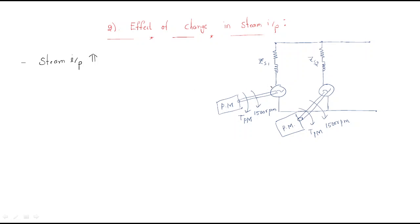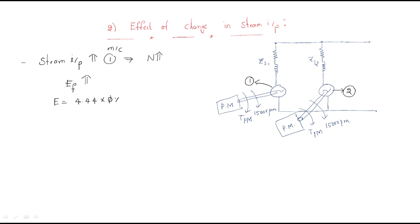Take machine one and machine two. If the steam input increases for machine one, the speed increases. With that speed increase, the EMF due to the field also increases. From the relation EMF = 4.44 × flux × frequency × number of turns, and speed = 120f/P, we see that as speed increases, frequency increases, and therefore the induced EMF also increases.